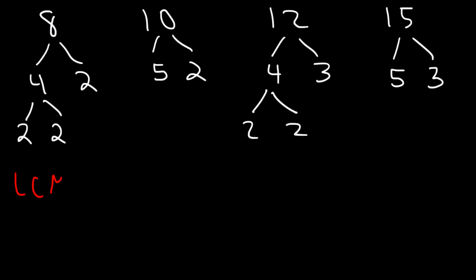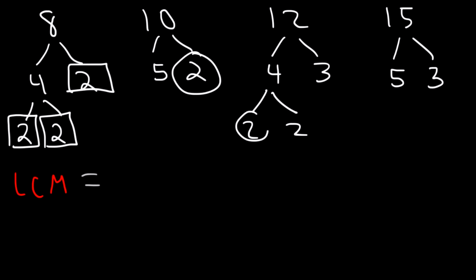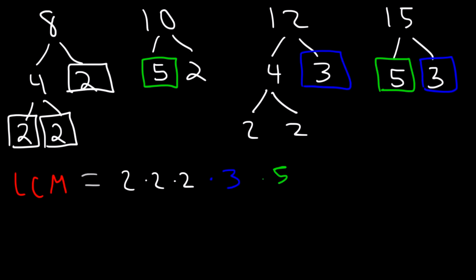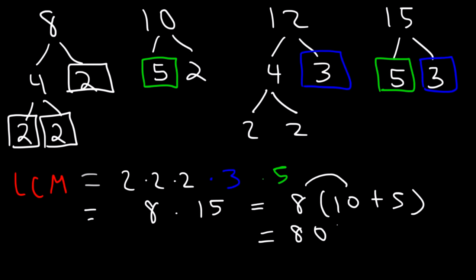Now let's find the LCM. The most number of 2s in any given number: 8 has three 2s (the most), 10 has one 2, and 12 has two 2s — so we use three 2s. The most number of 3s: 12 has one 3 and 15 has one 3, so we use one 3. The most number of 5s: 10 has one 5 and 15 has one 5, so we use one 5. So: 2 × 2 × 2 = 8, and 3 × 5 = 15, giving us 8 × 15 = 120. The LCM is 120.